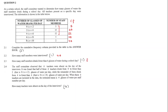Question 2.4. The staff committee observed that K teachers were absent on the day of the interviews. It was found that half of these K teachers drank from 0 to fewer than 2 glasses of water per day, while the remainder of them drank from 4 to fewer than 6 glasses of water per day. When these K teachers are included in the data, the estimated mean is 4 glasses of water per staff member per day. How many teachers were absent on the day of the interviews?